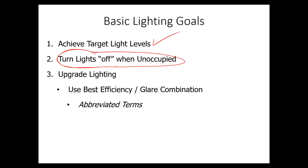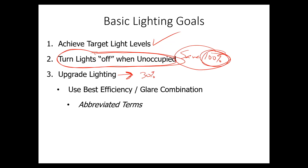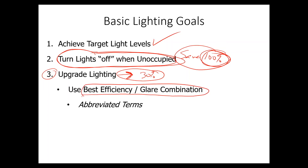The next principle is to turn the lights off when the building or space is unoccupied. This is obvious because you save 100% of the energy when you turn things off. Then the next step is to upgrade the lighting — you can get pretty attractive returns. Basically what you're trying to do is get the best efficiency or efficacy and glare combination available.